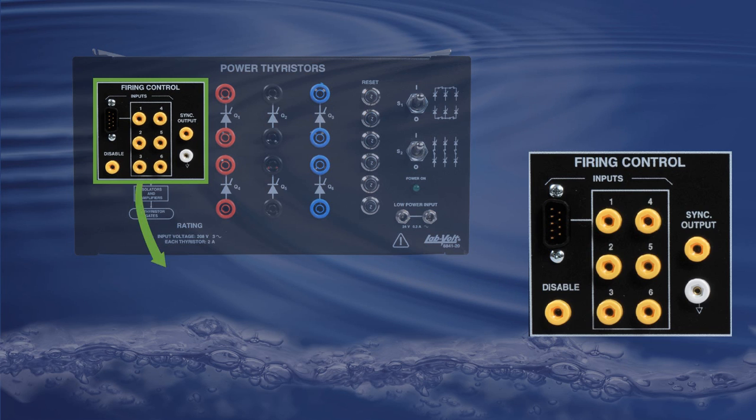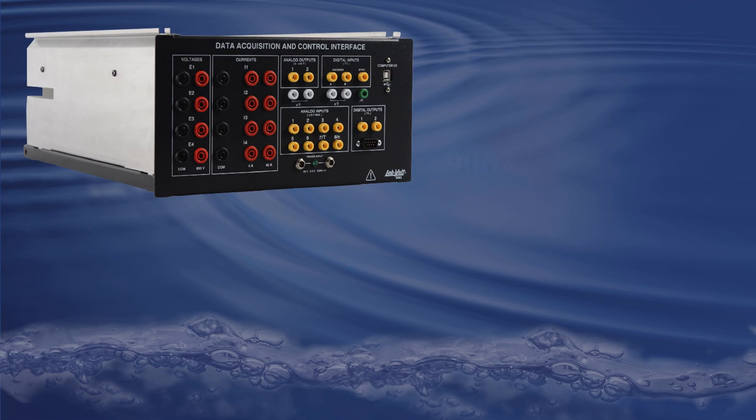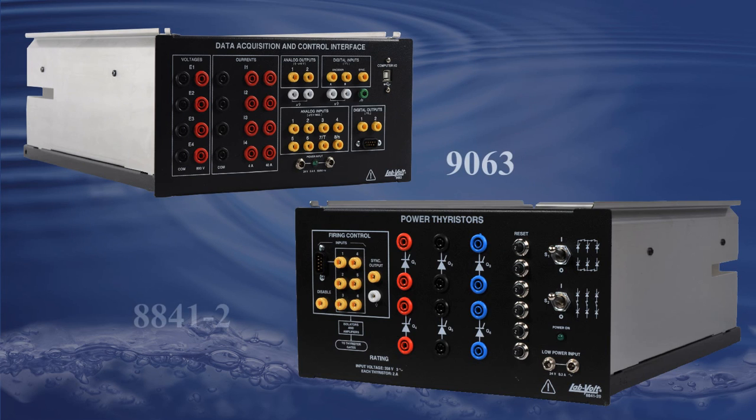At the left side of the module, you get the Firing Control Panel. You can either control the firing angle of each Thyristor using a 0.5-volt signal or connect this module to the 9063 using a DB9 cable for full control of the Thyristor by computer through the Thyristor Control function. You can then simply connect the power electronic circuit of your choice, select it in the list of functions, and start using it right away.